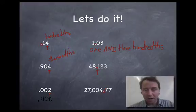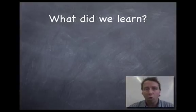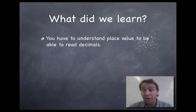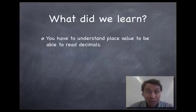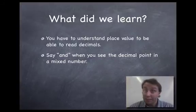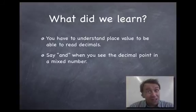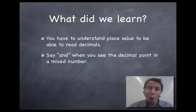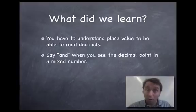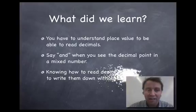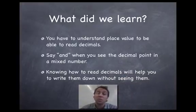But we're already kind of running out of time. So I want to just quickly go to what we learned. Well, we learned a whole bunch of stuff. We learned that you have to understand place value to be able to read decimals. If you don't know your decimal place values, you're not going to be able to read them. So make sure you learn that first. We also learned you have to say and when you see a decimal point in a mixed number. So if there's no whole number there, well, you don't have to worry about it. But if there is a whole number there, then you separate your whole number and your decimal with the word and. Pretty easy once you practice it a little bit.